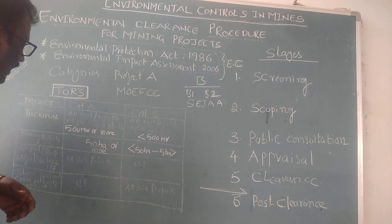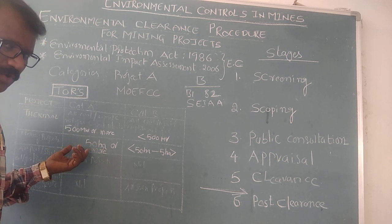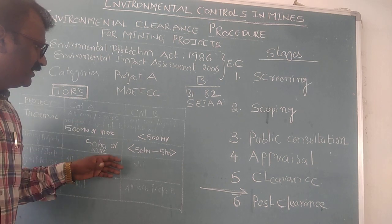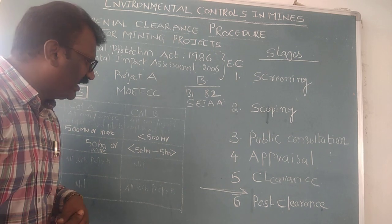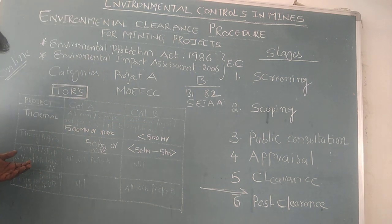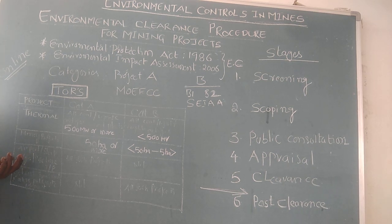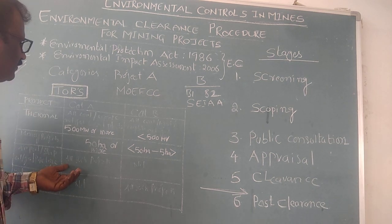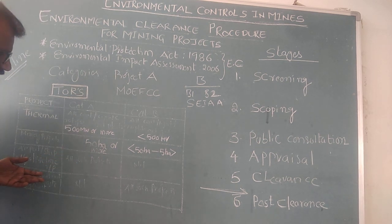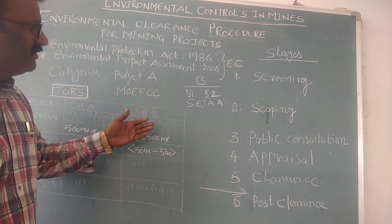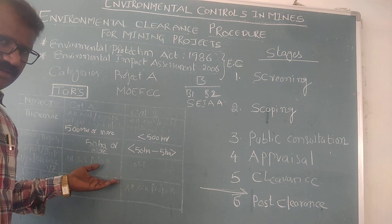For mining projects, an area of 50 acres or more falls into Category A, while less than 50 acres and below 5 acres falls into Category B. Similarly, airports, ships, oil and gas pipelines, and transportation projects generally fall into Category B, which is further divided into B1 and B2 depending on the affected regions.